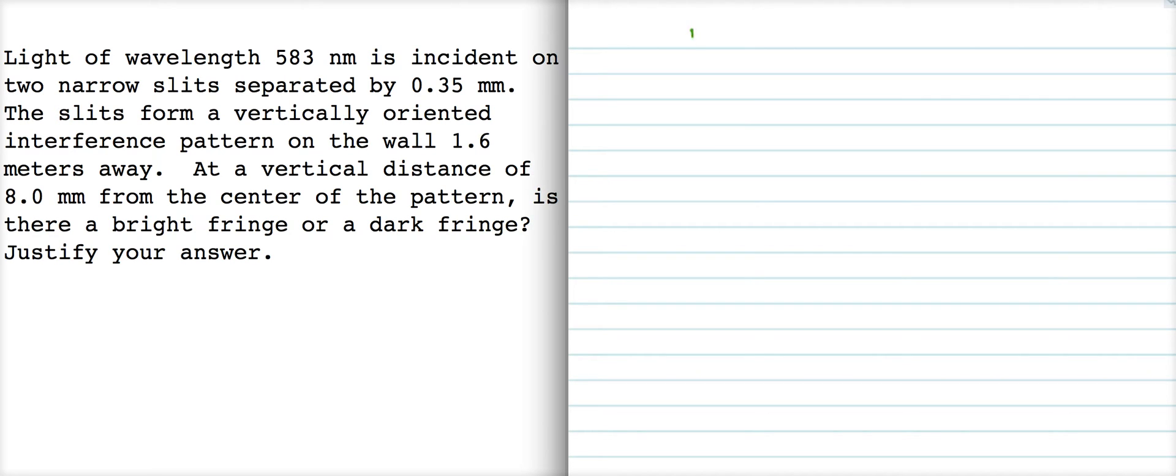Okay, so we have two-slit interference here. The idea is that we have slits separated by a distance d, and the light from those slits goes off in some direction toward the wall over here, right where the center of the diffraction pattern on the wall is here.